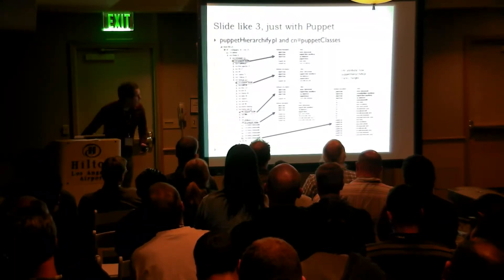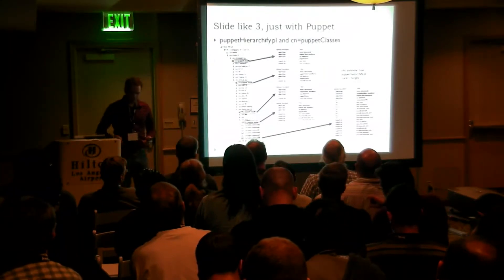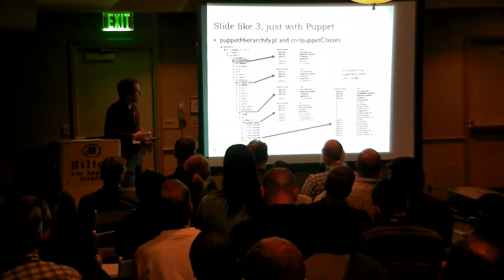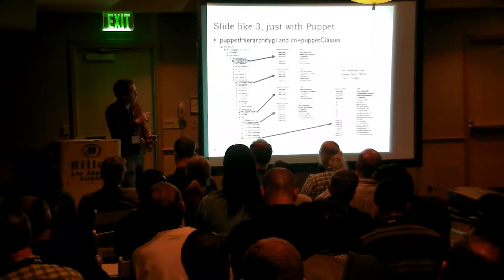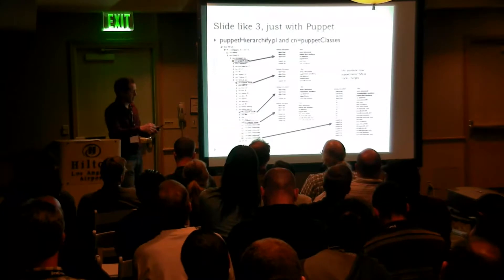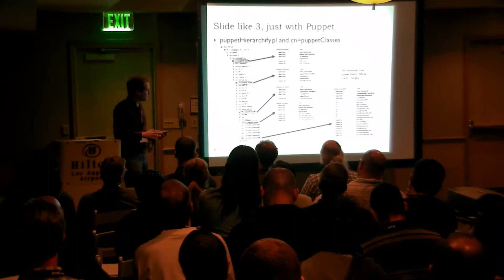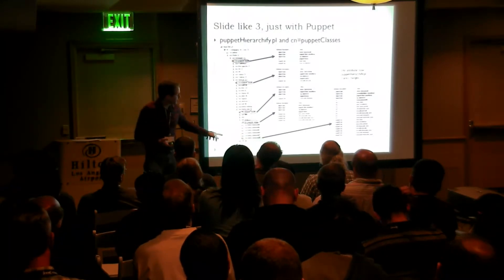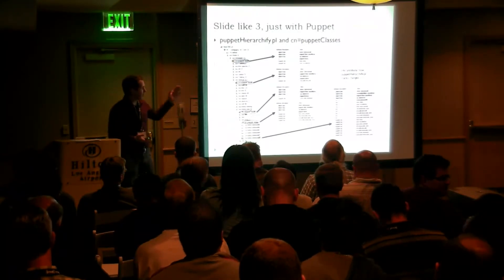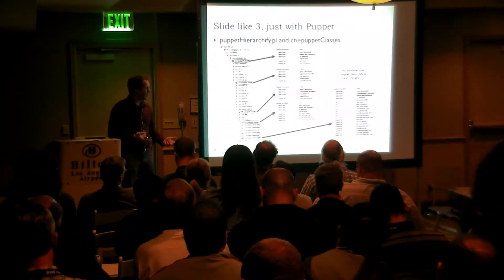The Puppet Hierarchify.pl script — anytime it applies a puppet class to a system, it also applies an info attribute of the same name. That way it can differentiate between a class that Puppet Hierarchify applied and a manually applied class. If I wanted to manually associate a class with a system, I still could. The way Hierarchify would know that I manually applied it versus it automatically applying it would be that there's no corresponding info attribute.